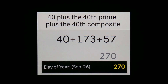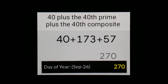On a leap year, 269 is actually the 270th day of the year, and remember we were connecting this to 40. I know Zach, you don't like the number magic as you call it — or you do like it but you don't think I should talk much about it — but I can't resist. Stop the video now if this is too much. But 40 plus the 40th prime plus the 40th composite equals 270, the 270th day of the year, which is September 26th.